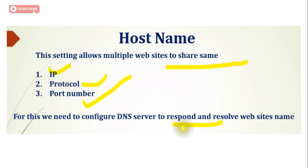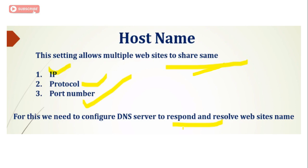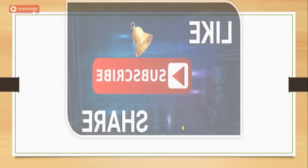The last binding option is host name. This setting allows multiple websites to share the same IP address, protocol, and port number. For this, we need to configure DNS to respond and resolve website names — DNS is very important in this kind of configuration. I will show you how to map a website to a host name; it is a very simple configuration, nothing difficult.